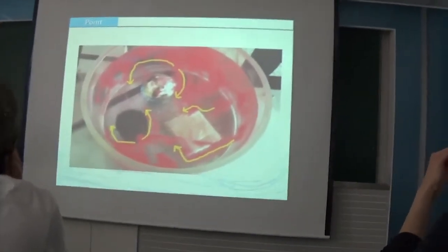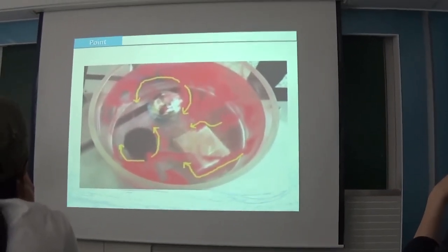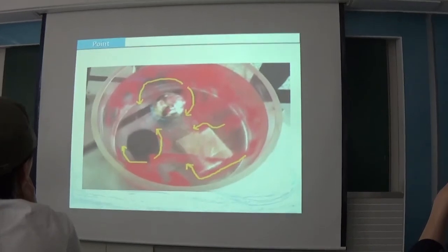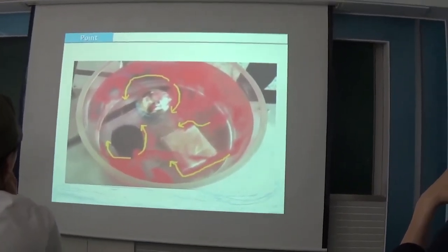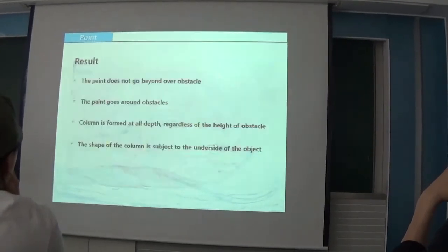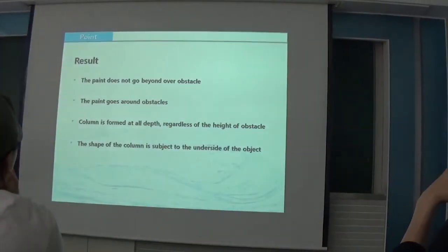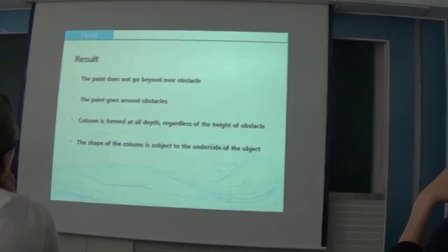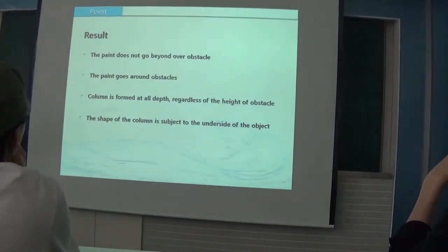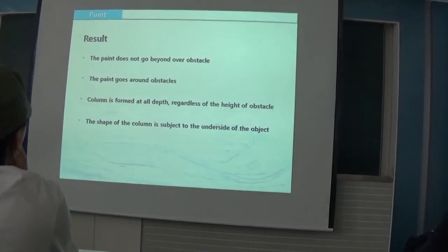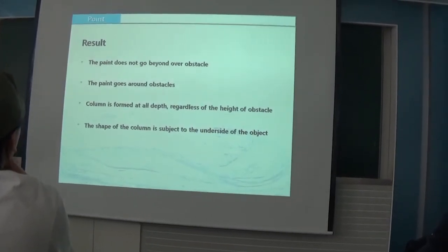This is the best picture we captured from the video. When you see this picture, you can see ink goes by the side following the shape of the bottom line of the top obstacle. As a result of this experiment, we can see the ink goes by the side of the top obstacle, not over the top of the obstacle. And the column follows the boundary of the bottom line.